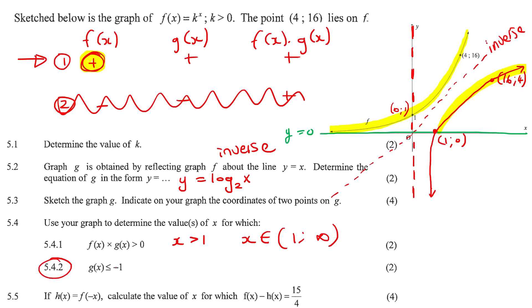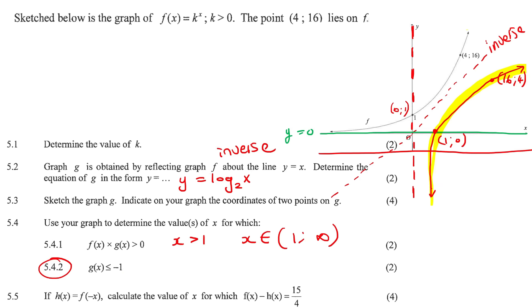This next question says where is g of x, which is the log graph, this one over here, where is that smaller than minus 1? So that's a y value of minus 1. So y value of minus 1 is probably somewhere over here. So they want to know where is it smaller than that, where is it under that? So that would be this area here.